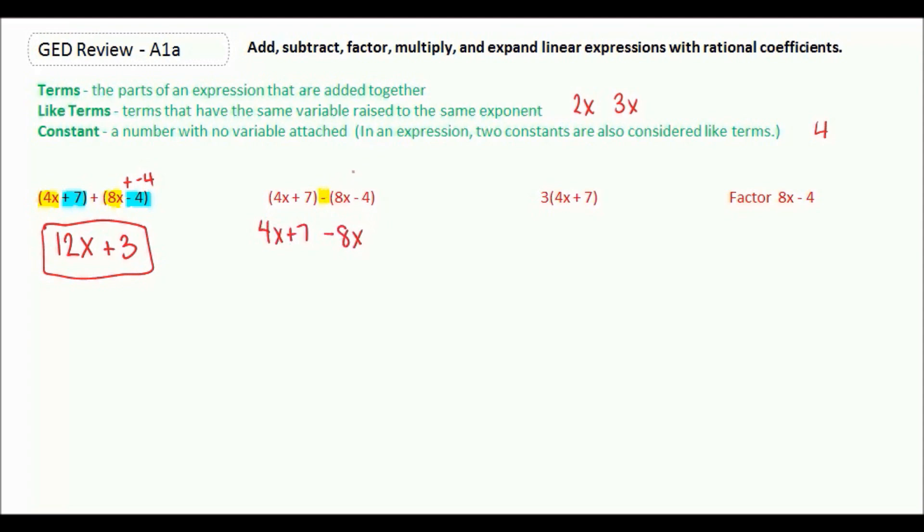We have 4x + 7, but now we're subtracting 8x, and here we're subtracting a negative 4, which really means we're adding 4. So once again, my like terms are 4x and negative 8x, and then 7 and positive 4. 4x plus negative 8x gives me negative 4x, and 7 plus 4 is a positive 11.